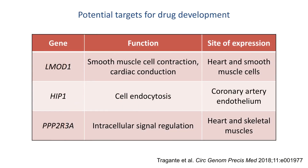Using the second pipeline, the authors calculated the drugability score for each gene product related to CAD and MI susceptibility but not targeted by existing drugs. Using the drugability scores, the number of concordant and discordant directions of effect, and information on tissue-specific expression obtained from the Protein Atlas, they identified the three most suitable candidate genes for drug development: LMOD1, HIP1, and PPP2R3A.